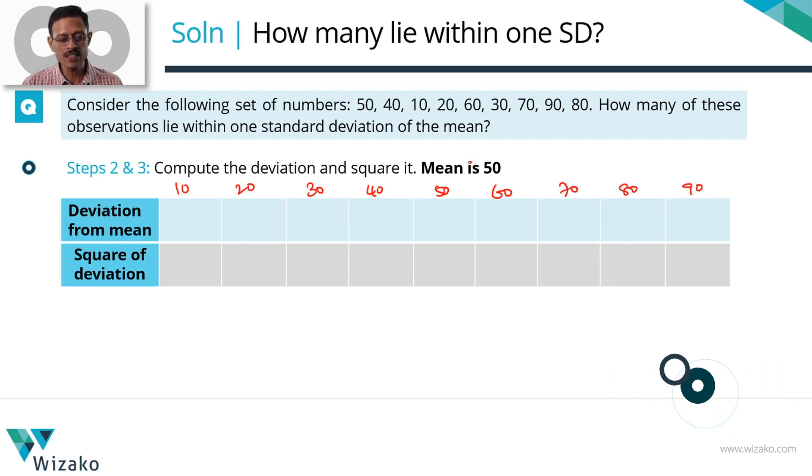The deviations therefore will be: mean is 50. 10 minus 50, minus 40 is the deviation for this number. 20 minus 50 is minus 30. 30 minus 50 is minus 20. 40 minus 50 is minus 10. 50 minus 50 is 0. 60 minus 50 is 10. 70 minus 50 is 20. 80 minus 50 is 30. 90 minus 50 is 40.